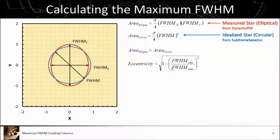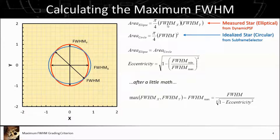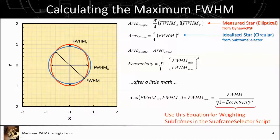All we have to do is a little math to come up with the maximum FWHM. Take the FWHM from the subframe selector script and divide it by the fourth root of (1 minus the eccentricity squared). This can then be put in as a weighting function for our subframes in the subframe selector script.